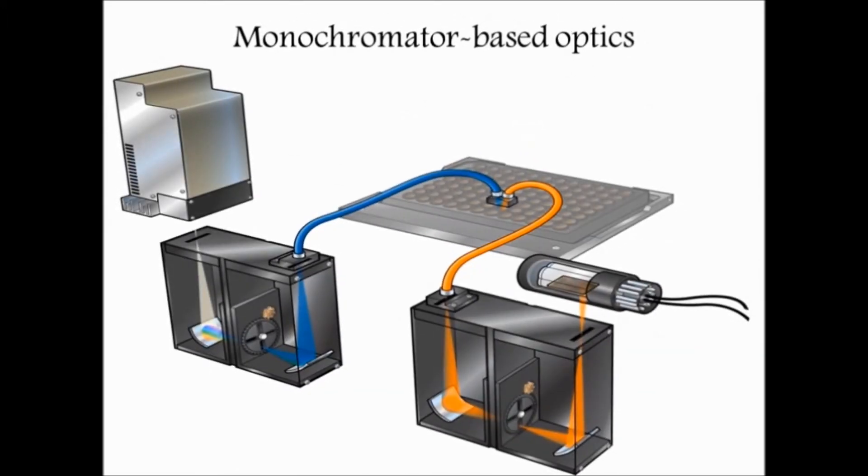Monochromator-based optics: Light source is necessary for providing the light. Excitation carrier selects wavelength using a narrow light aperture and transmits light to the sample. Emission carrier receives light from the sample and sends it to the detector. The detector detects the transmitted light from the sample and determines the absorbance of the sample.